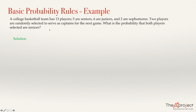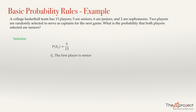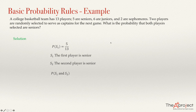We have in total 13 players. We define S1 as the event that the first selected player is a senior, and S2 as the event that the second player is a senior. We want to find the probability that the first player is senior AND the second player is senior, which is equivalent to saying both selected players are seniors.